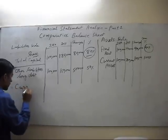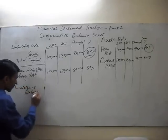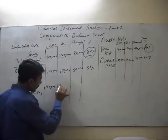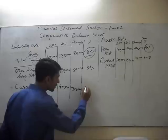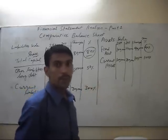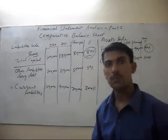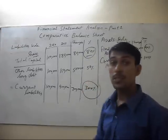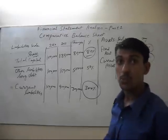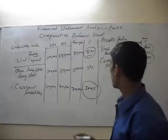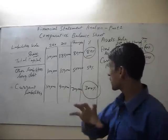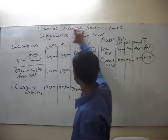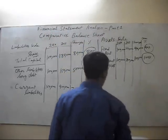And then current liabilities. This increase by 300%, so our working capital is also negative, this is a 200% negative working capital. So this is not a good financial position which we can calculate only by making the comparative balance sheet.